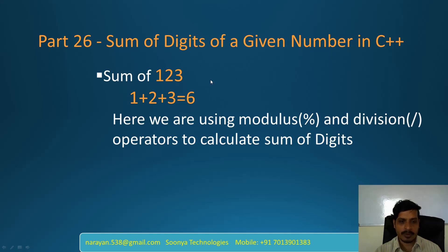For example, if we provide input as 123, then we need to get individual digits like 1, 2, 3. Later we need to add those digits like 1 plus 2 plus 3 equal to 6.